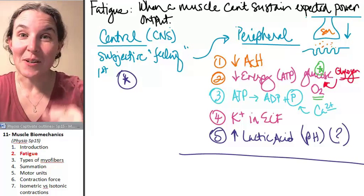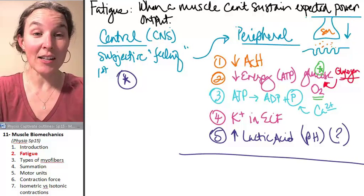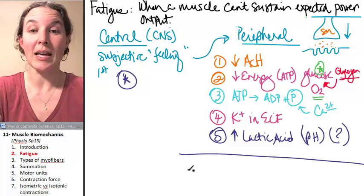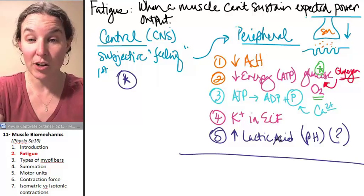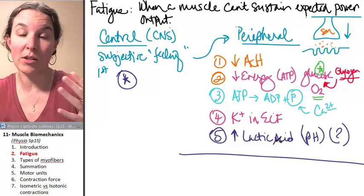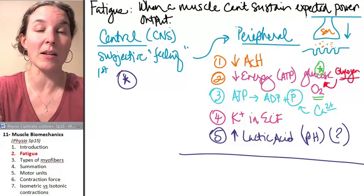Okay, so the next thing we're going to talk about are the different kinds of myofibers, and it relates to this because these characteristics, these qualities are different in different kinds of muscle cells.